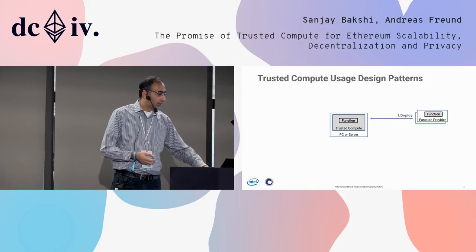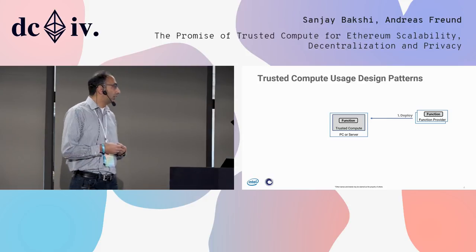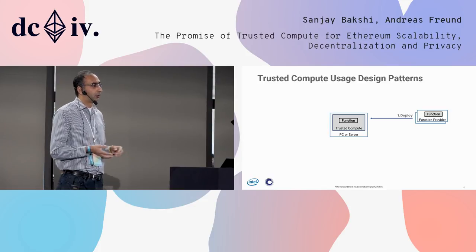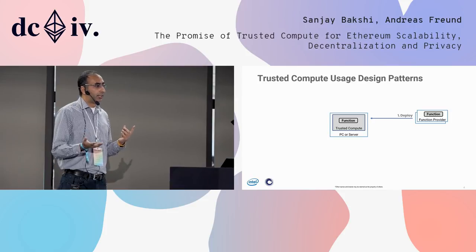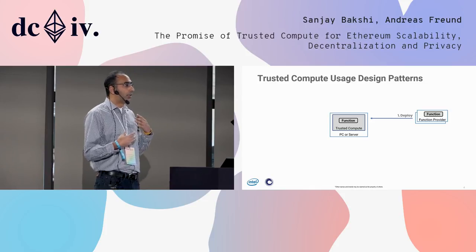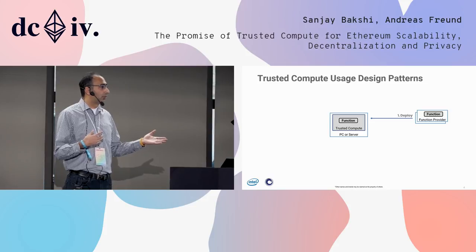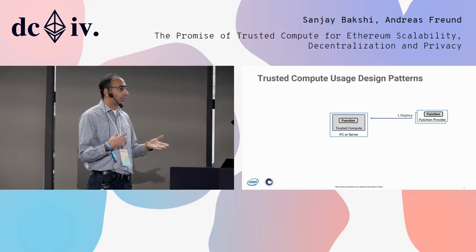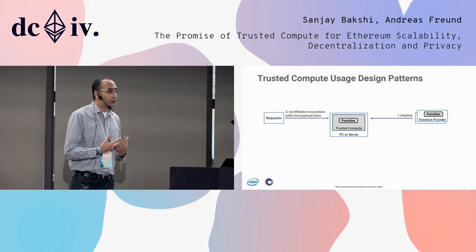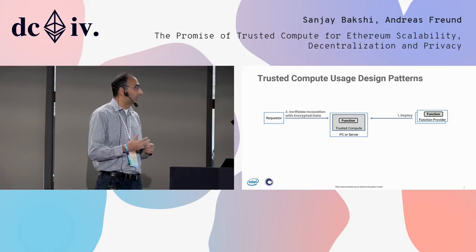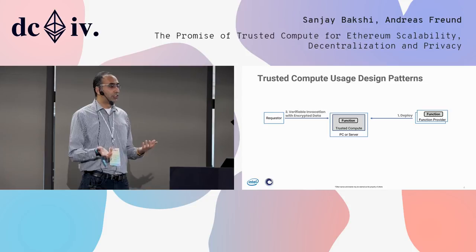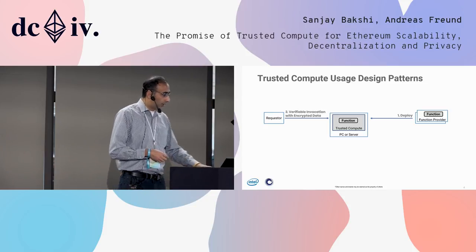That function is typically called an enclave, and it can be anything — matching fingerprint data against a template, or finding a particular pattern in something. The idea is that you can be sure that a particular set of instructions were executed and that your data was handled confidentially. Any requester can provide two things: the data on which they would like to operate, and their own identity that the enclave will check before even executing the request.